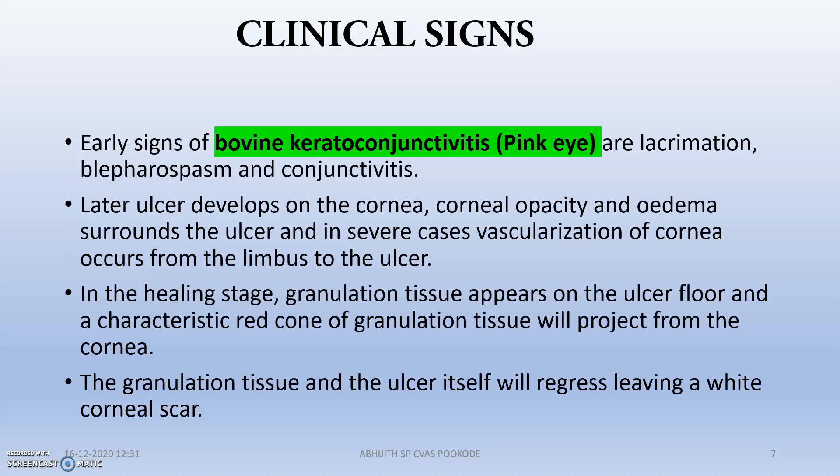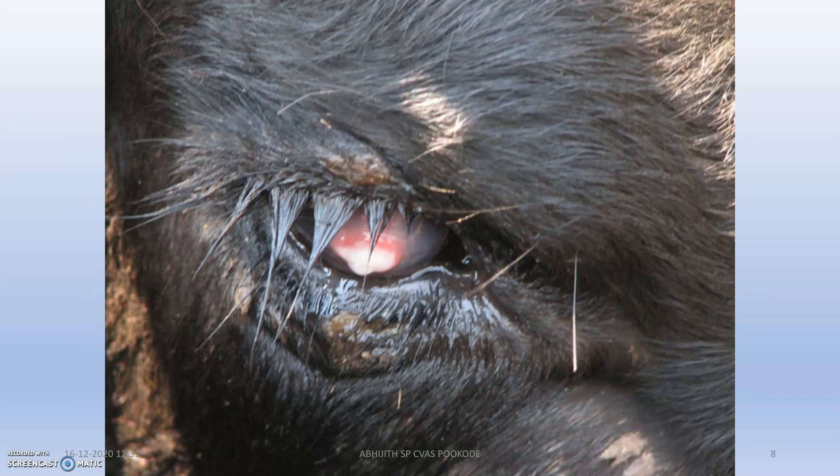The clinical signs are lacrimation and blepharospasm/conjunctivitis. In the later stage, a red cone of granulation tissue forms from the cornea. The granulation tissue and the ulcer itself will regress, leaving a white corneal scar.